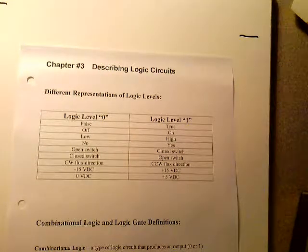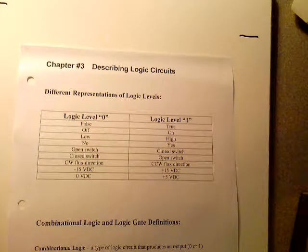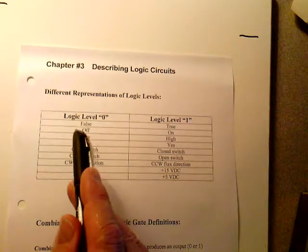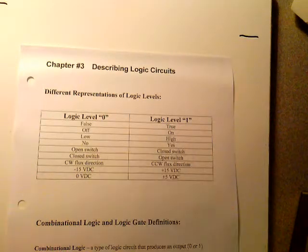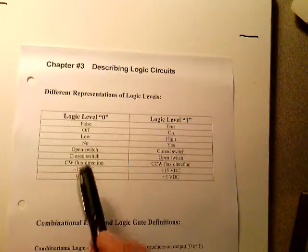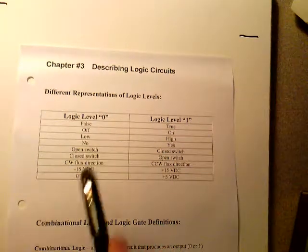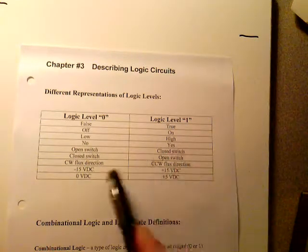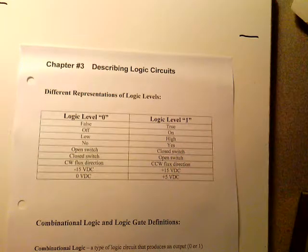Starting on page 38 of our lecture notes, Describing Logic Circuits, Chapter 3, there's a different way of representing logic levels. Logic level zero can be represented as a false condition, and logic level one would be true. Logic level zero could be off — a switch being off — and logic level one could be the switch being on. Logic level zero could be something being low, logic level one could be something being high. No for a low, yes for a high. A lot of times an open switch will represent logic level zero, and a closed switch will be a logic level one.